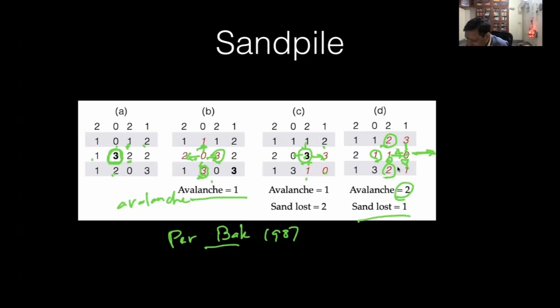Sorry, I made a mistake. The sand was dropped here at this point. This became three and this became one, and two sands were lost. I did not notice that this was three. Then sand was dropped here, then sand was dropped here, and it led to this.